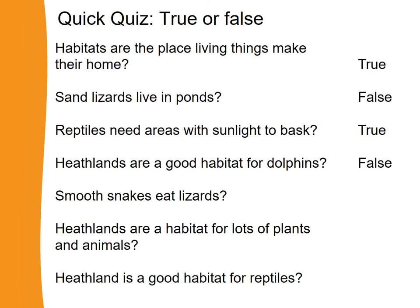True or false? Smooth snakes eat lizards. That one is true. Smooth snakes live on heathlands, as do many — in fact all — of our reptiles. And smooth snakes do eat smaller snakes and lizards that also live on these heathlands.